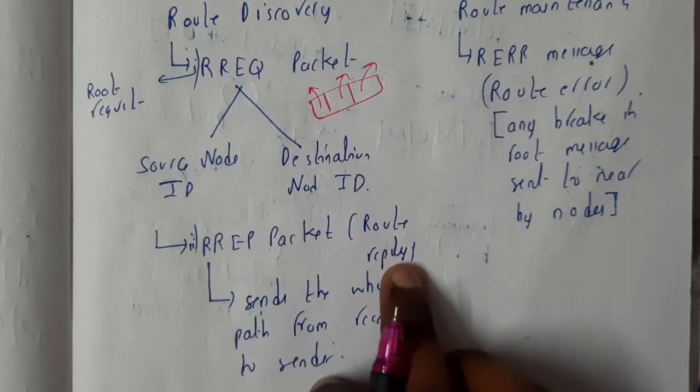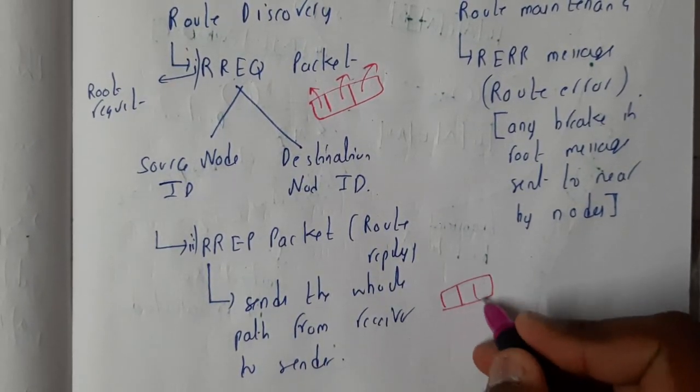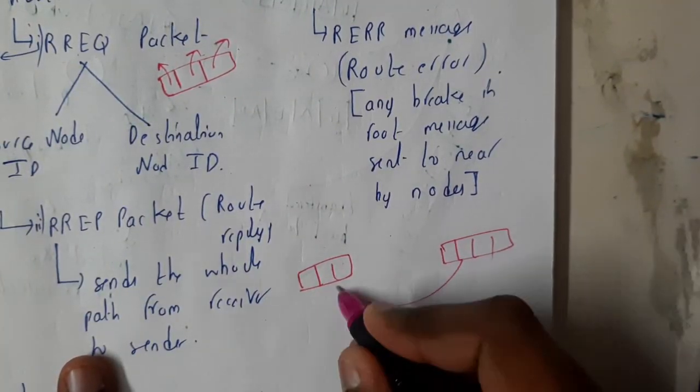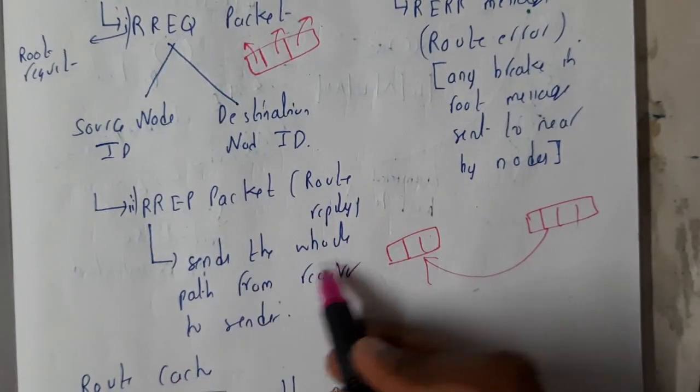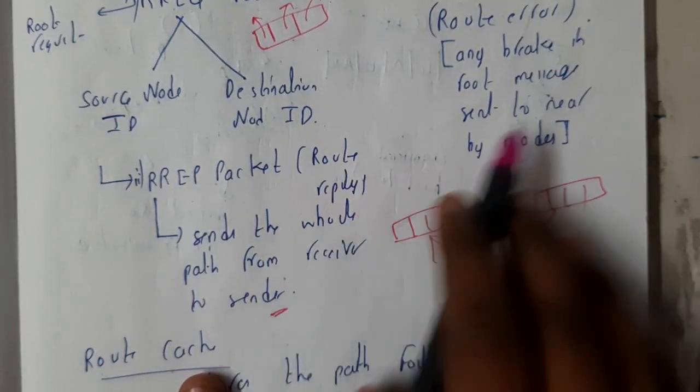We are also having the route reply. Route reply is nothing but once the whole process is done and you reach the final state, then the final state result is sent to the start state. That is nothing but sending the whole path from the receiver to the sender. That is nothing but route reply.